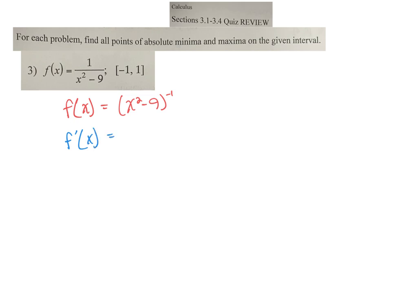So first derivative is negative 1 times x squared minus 9 to the negative 2. Derivative of the inside is 2x. So my derivative looks like this.